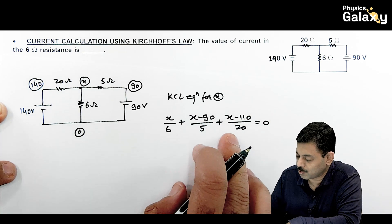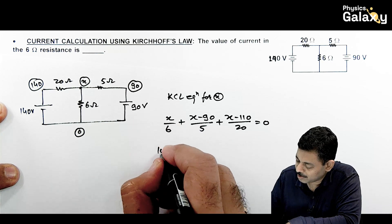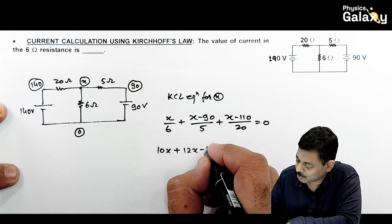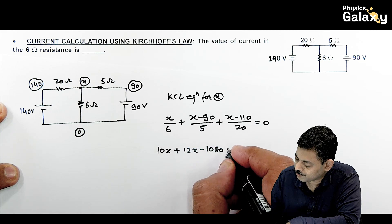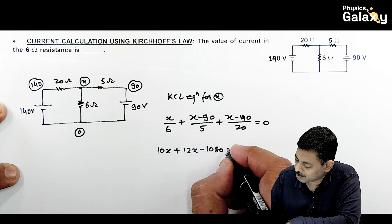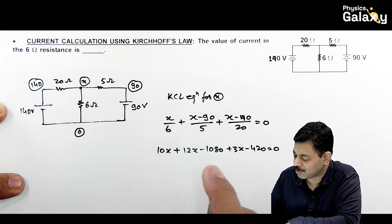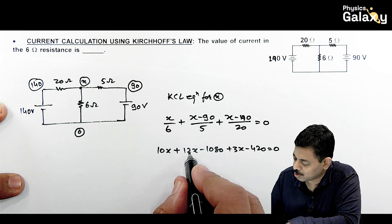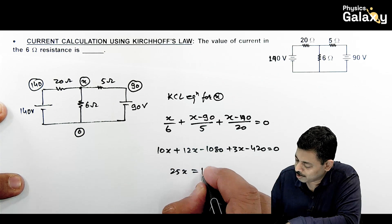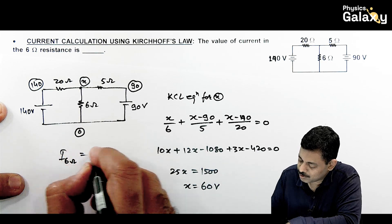Taking LCM as 60: 10x + 12x − 1080 + 3x − 420 = 0, which simplifies to 25x = 1500, giving x = 60 volts.